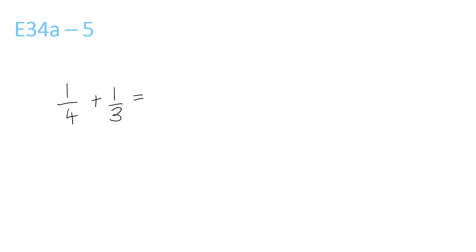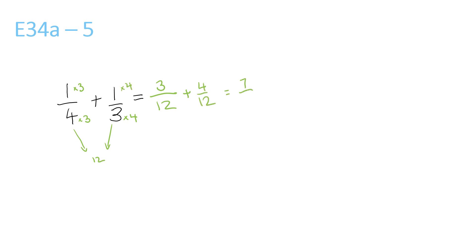4 and 3 — they both go into 12, so we know the bottom number is 12. 4 times 3 is 12, so we have to times the top and bottom by 3. 1 times 3 is 3. Plus, 3 times 4 is 12, so we have to times the top by 4 to get 4 over 12. This gives us 7 over 12.